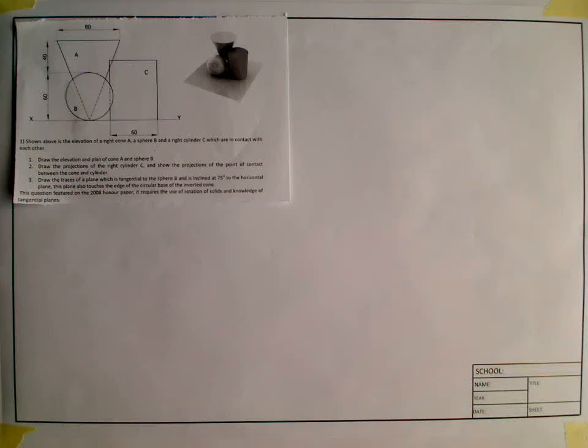Shown above is the elevation of a right cone A, a sphere B, and a right cylinder C which are in contact with each other. Draw the elevation and plan of the cone A and sphere B.